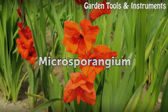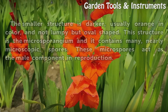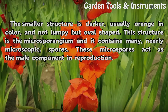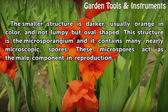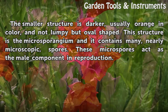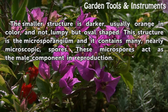Microsporangium. The smaller structure is darker, usually orange in color, and not lumpy but oval shaped. This structure is the microsporangium and it contains many nearly microscopic spores. These microspores act as the male component in reproduction.